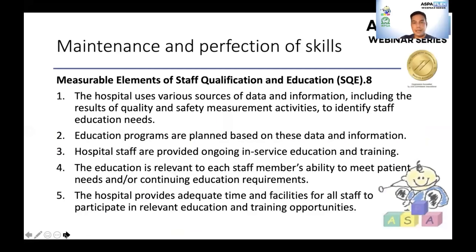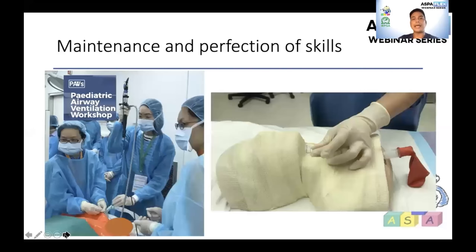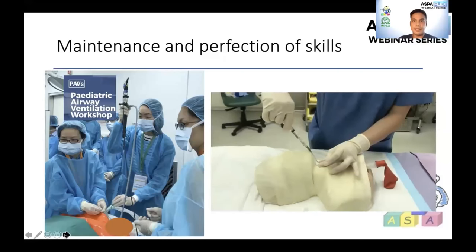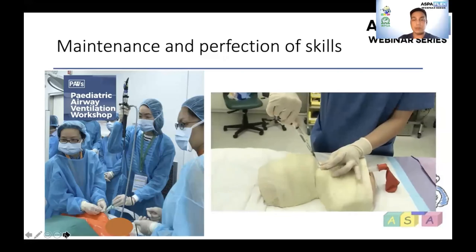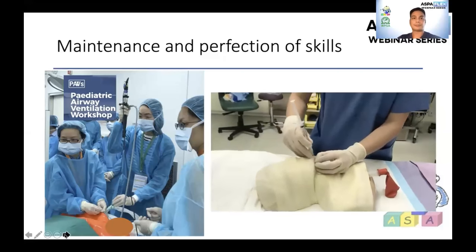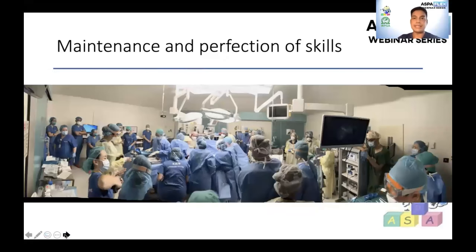This is supported by JCI standard under Staff Qualification and Education, which states that each staff member must receive in-service education and training to maintain or advance their skills and knowledge. In KK Pediatric Anesthesia, a Maintenance of Skills program organizes yearly sessions for all skill sets relevant to critical events, including difficult airway management. The training gives confidence and preparedness in handling difficult airway cases. Furthermore, when a known difficult airway case is anticipated, the team can organize a simulation exercise with all healthcare providers involved, testing equipment, clarifying providers' roles, escalation plans, and crowd control.